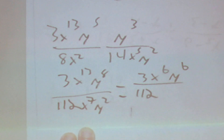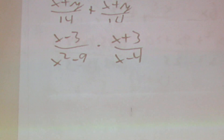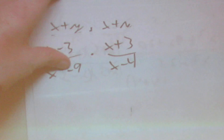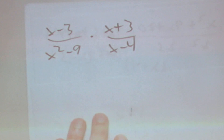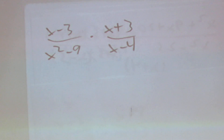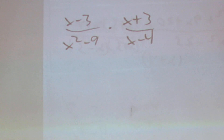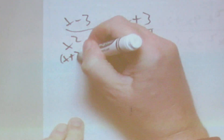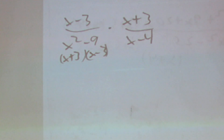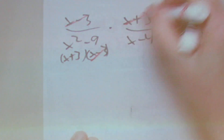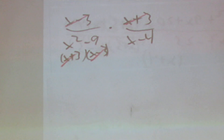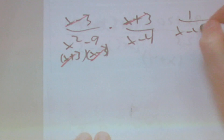The next question is going to be something like x to the 3rd over x squared minus 9, times x plus 3 over x minus 4. The only one we can factor is x squared minus 9, which factors to x plus 3 times x minus 3. Now we can cancel: x minus 3 appears on top and bottom, and x plus 3 appears on top and bottom. So all we're left with is 1 over x minus 4.